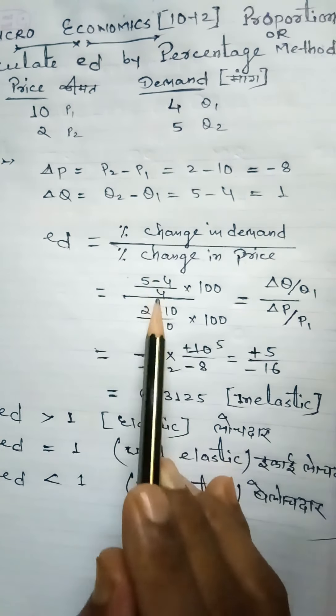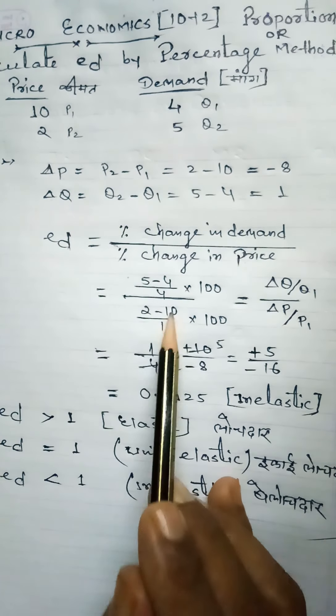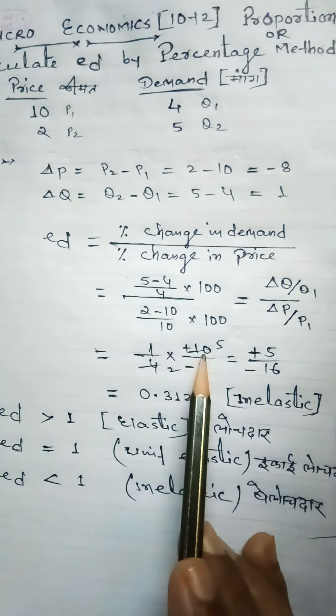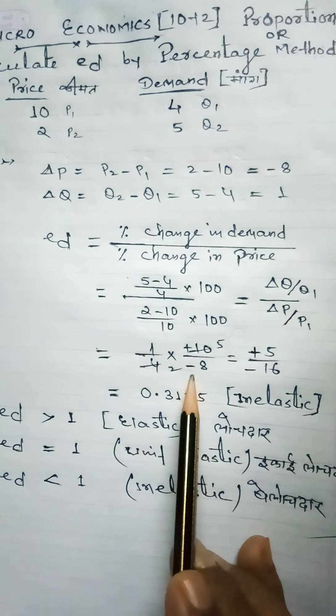5 minus 4 equals 1 by 4. 2 minus 10 equals minus 8 by 10. Simplifying, we get 1 times 10 divided by 4 times minus 8.